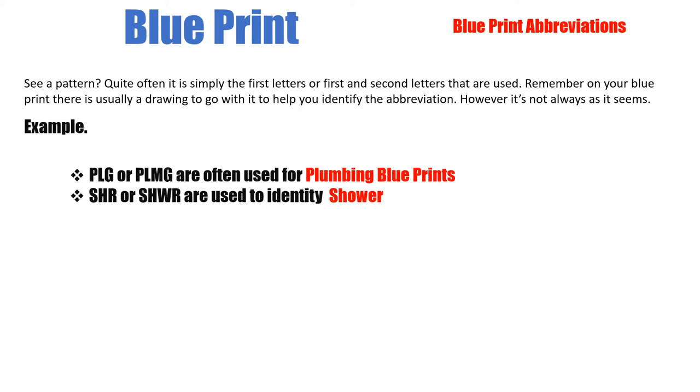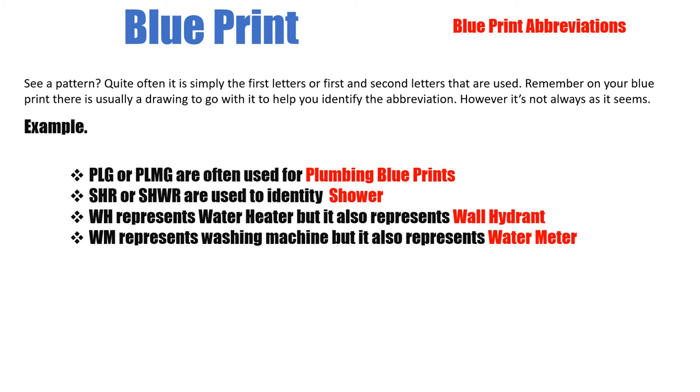WH represents water heater but it also represents a wall hydrant. WM represents a washing machine, but it also represents the water meter. So these are examples where you would have to have the abbreviation with the symbol just to clarify exactly what it is the blueprint is dealing with.